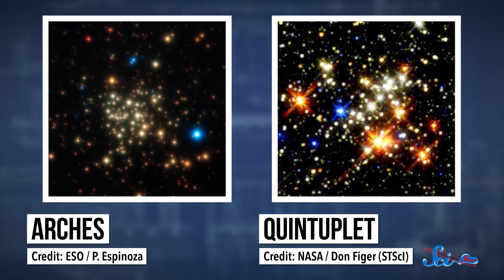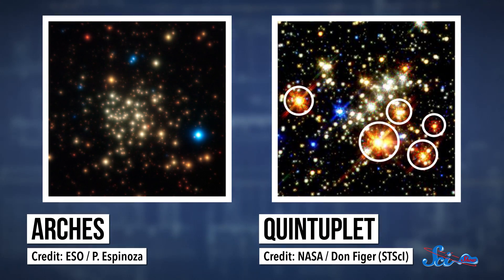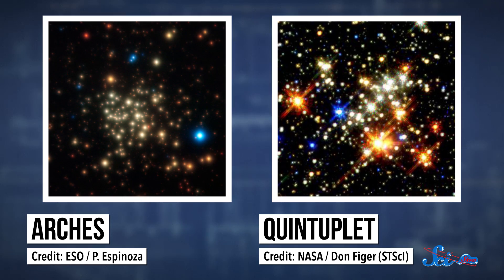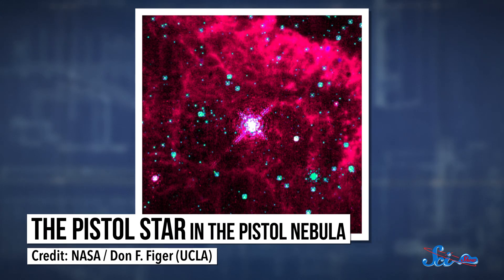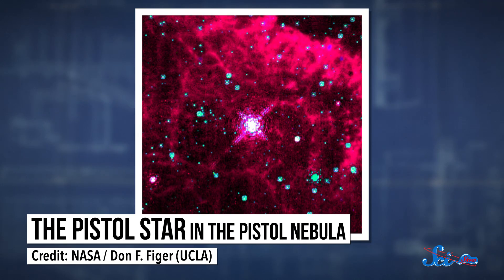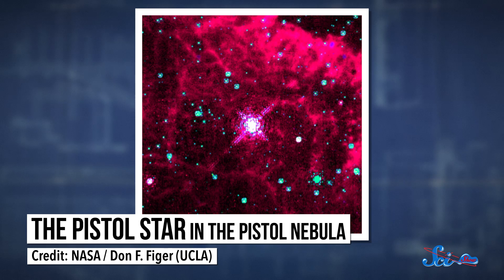Two of the most famous clusters are called arches and quintuplet, and they pack stars in densities more than 100,000 times higher than in our part of the galaxy. The quintuplet cluster contains one of the most luminous stars known, the Pistol star. And it probably couldn't have formed anywhere else in the galaxy, because it would have needed a lot of mass to pile up really quickly.